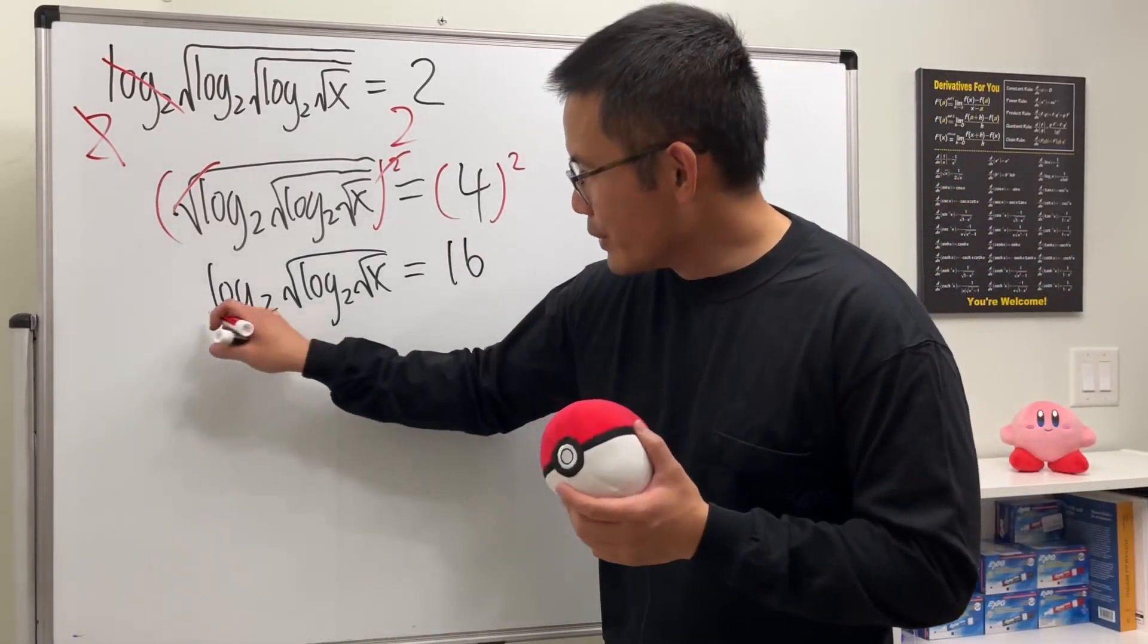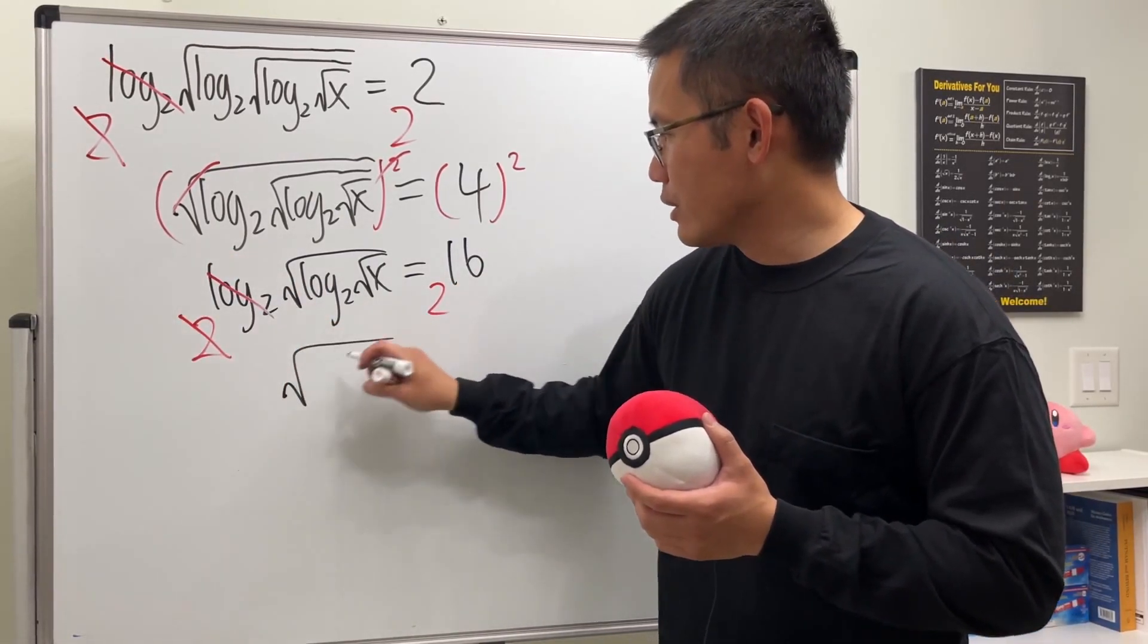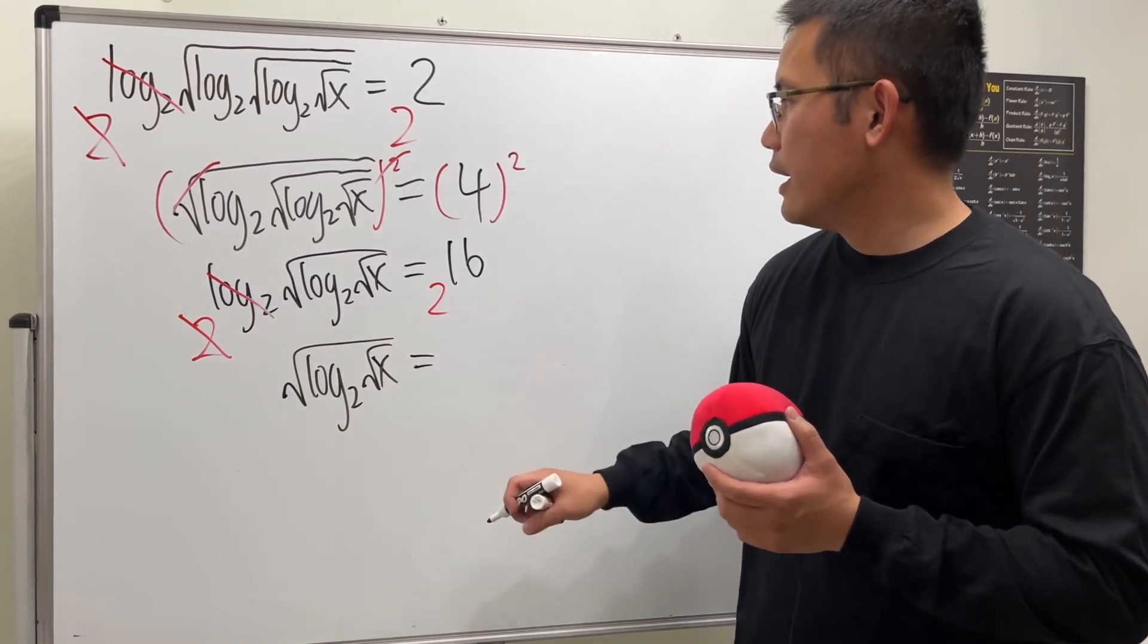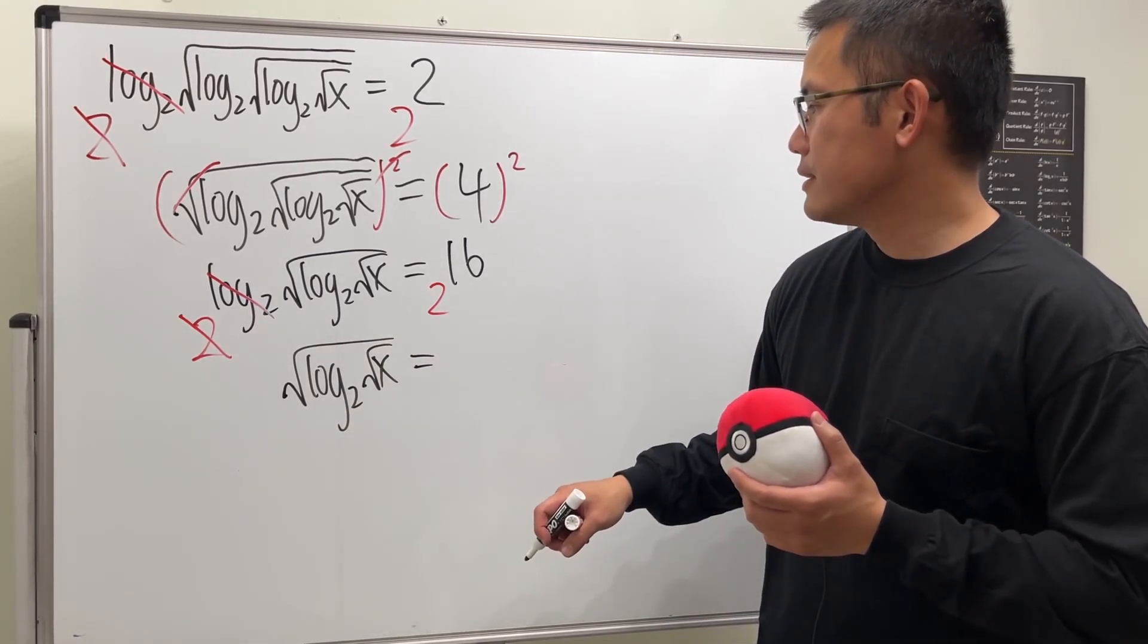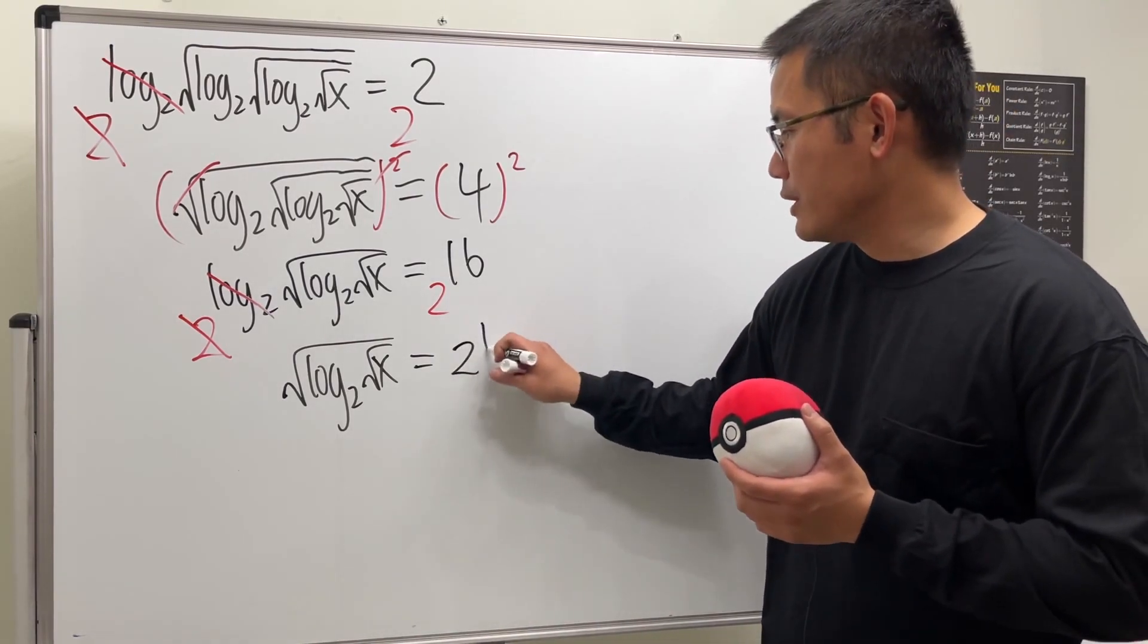Next we put 2 to this power, 2 to the power. Cancel, cancel, and we have square root of log base 2 square root of x. And I'm just going to leave it like this: 2 to the 16.